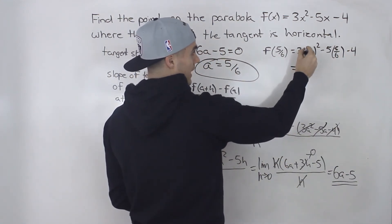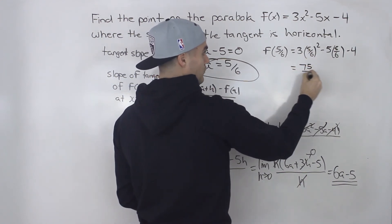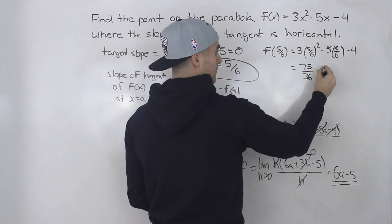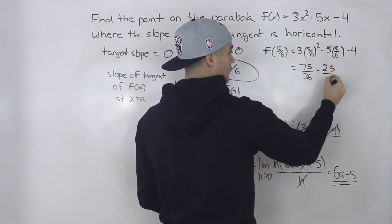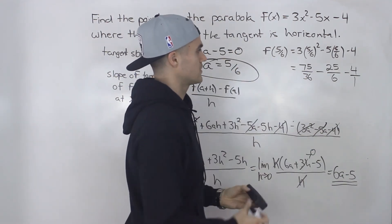So we'd have 3(5/6)² - 5(5/6) - 4. So then here we'd have 25/36 times 3 would give us 75/36 - 25/6 - 4. Let's put it over 1.